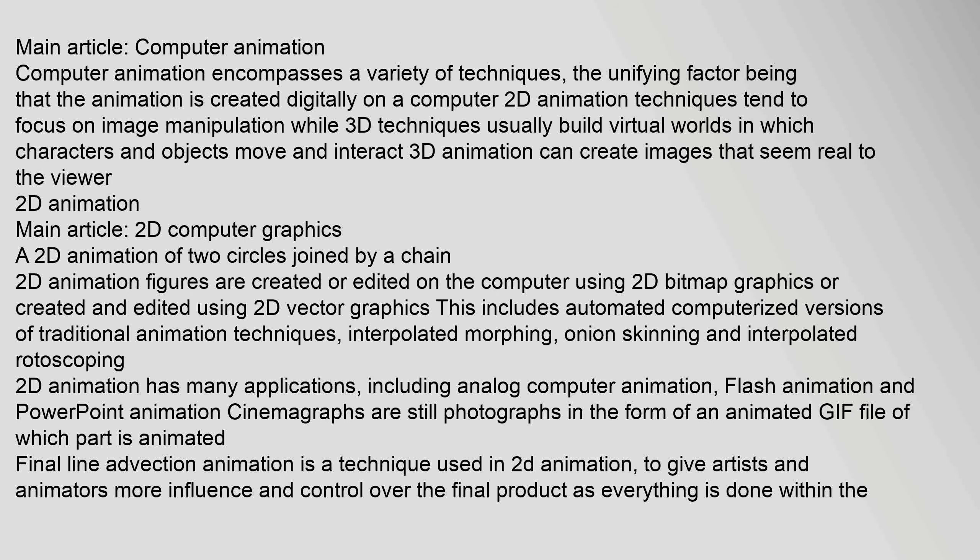Computer animation encompasses a variety of techniques, the unifying factor being that the animation is created digitally on a computer. 2D animation techniques tend to focus on image manipulation, while 3D techniques usually build virtual worlds in which characters and objects move and interact, and can create images that seem real to the viewer. 2D animation figures are created or edited on the computer using 2D bitmap graphics or 2D vector graphics, including automated computerized versions of traditional animation techniques such as interpolated morphing, onion skinning, and interpolated rotoscoping.